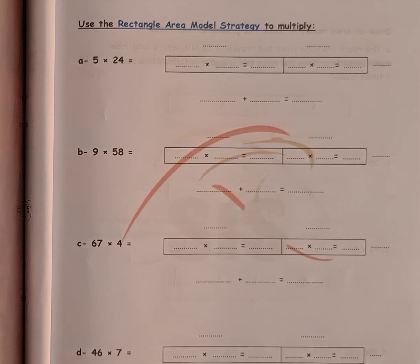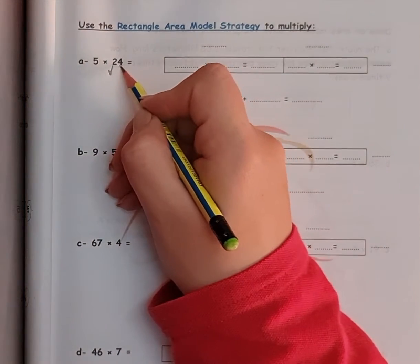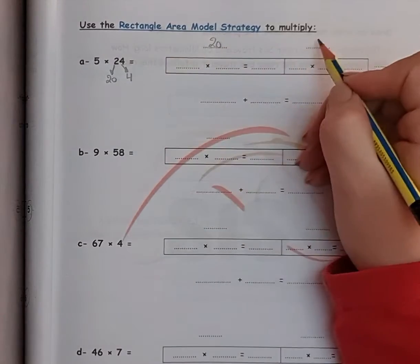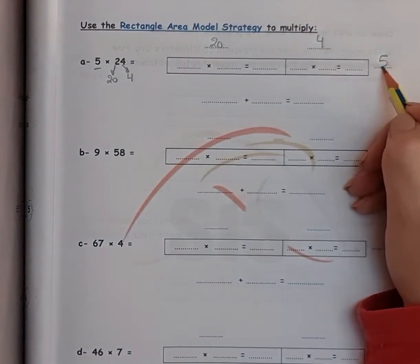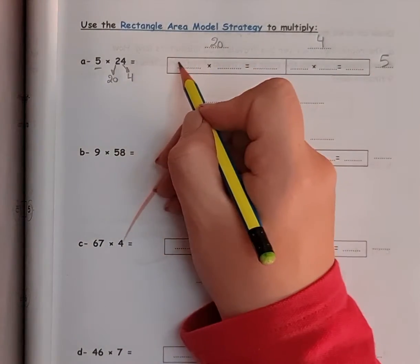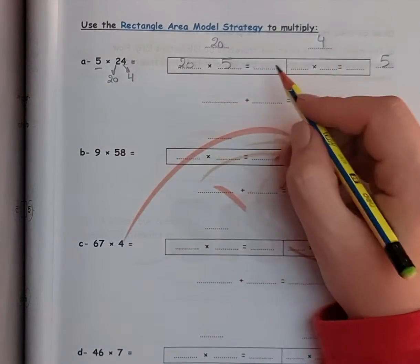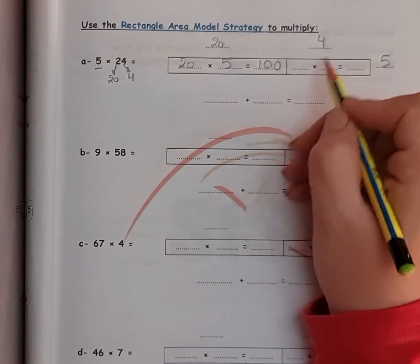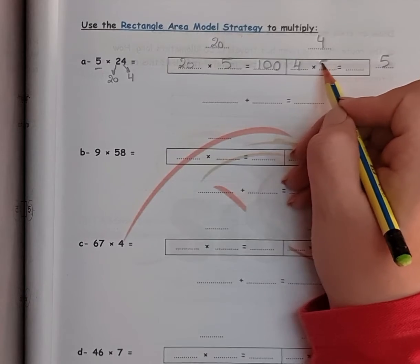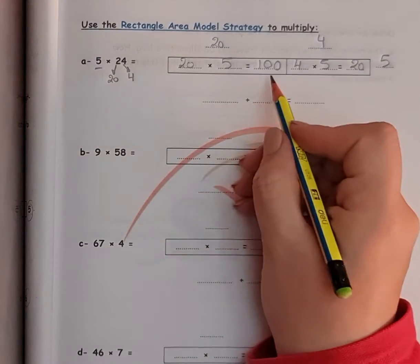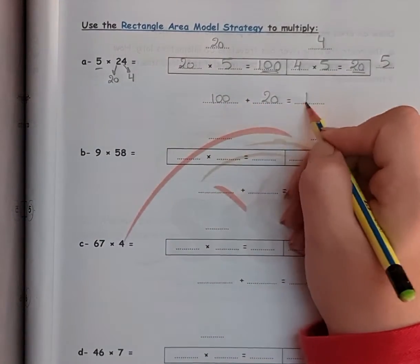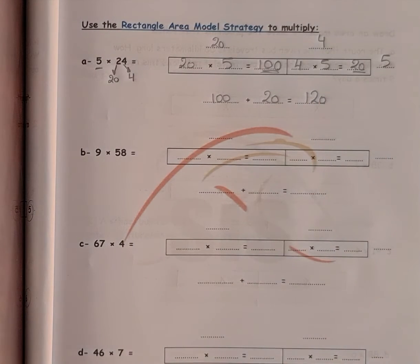Page 5 in Unit 7. First problem: 5 times 24. I will break down the big number as we said before — it will be 20 and 4. Write 20 here and 4 here, and put the 5 here. So 20 times 5: kick the 0 out, 2 times 5 equals 10, giving 100. Then 4 times 5 equals 20. Add them together: 100 plus 20 equals 120. Easy!